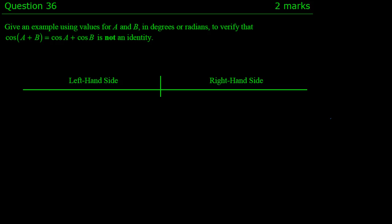Question 36. Give an example for A and B, their angles, in degrees or radians to verify that cosine of A plus B equals cos A plus cos B is not an identity.